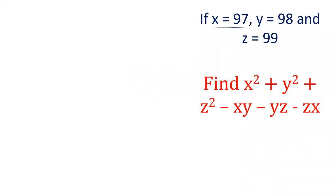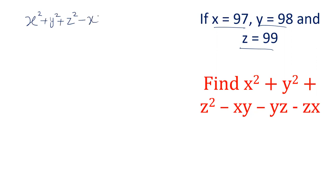The values are x, y, z are 97, 98, 99. That is, each value is three consecutive integers we can say. And we have to find out the value of x² + y² + z² - xy - yz - zx.